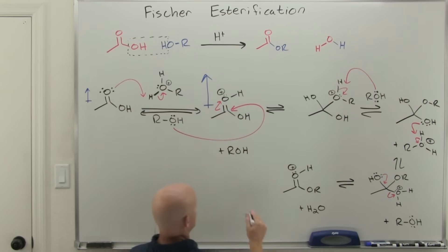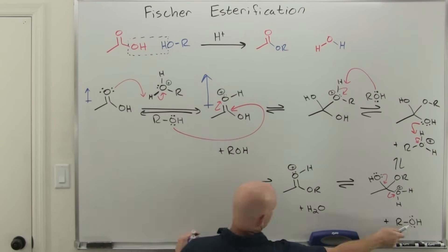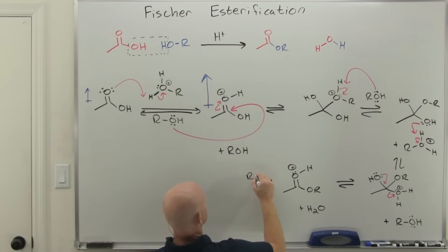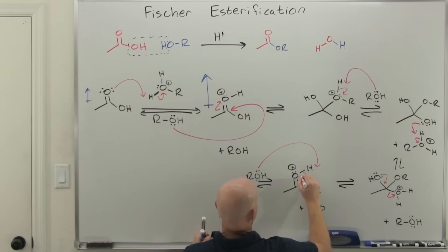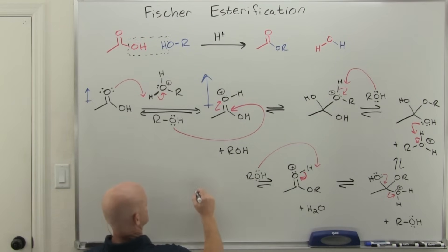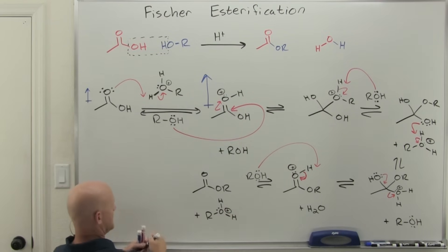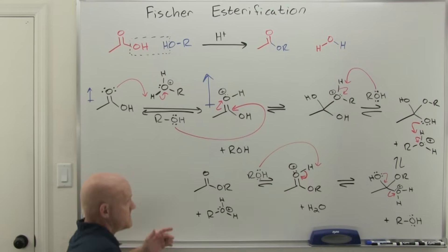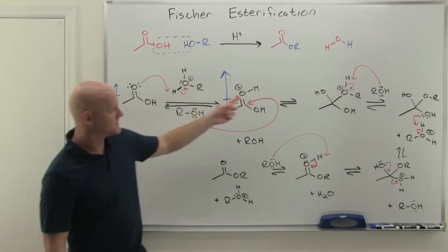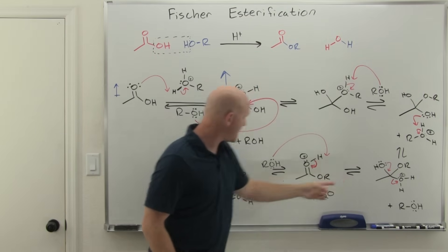Water forms as the leaving group departs. To get to our final ester product, all we need to do is deprotonate the remaining oxygen, drawing in an alcohol molecule as base. This regenerates the acid catalyst at the end. That's the mechanism — a total of six steps, which is a very common pattern for acid-catalyzed mechanisms.